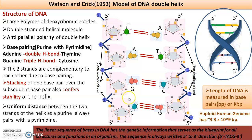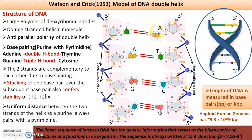Suppose a question gives you one strand of DNA. DNA is a blueprint of life with all the genetic information, and its sequence is written in 5' to 3' direction. For example, if you are given the sequence 5'-T-A-G-C-3' and asked to write the complementary strand: opposite T is always A, opposite A is T, opposite G is C, opposite C is G — giving you A-T-C-G written in 3' to 5'. If asked to write it in 5' to 3' polarity, the complementary strand is 5'-G-C-T-A-3'.